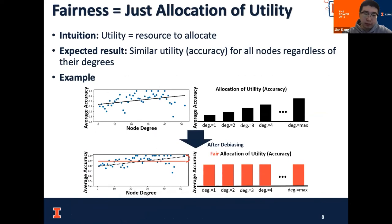Both of these limitations could require much more computational resources for model deployment. So in this work, what we want to answer is: how can we mitigate this degree-related unfairness without hurting the scalability of the GCN and without changing the GCN architecture? Different from previous work that learned additional degree-related information, we view this unfairness as the unfair allocation of utilities, where the resource to allocate is the utility of the GCN model.